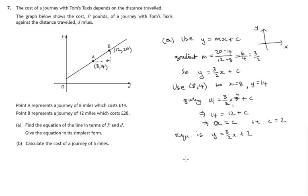In terms of p and d, we've got p is equal to 3 over 2d plus 2, which is what we had before. So that's Mr Korsi signing out and thanks for watching this video.